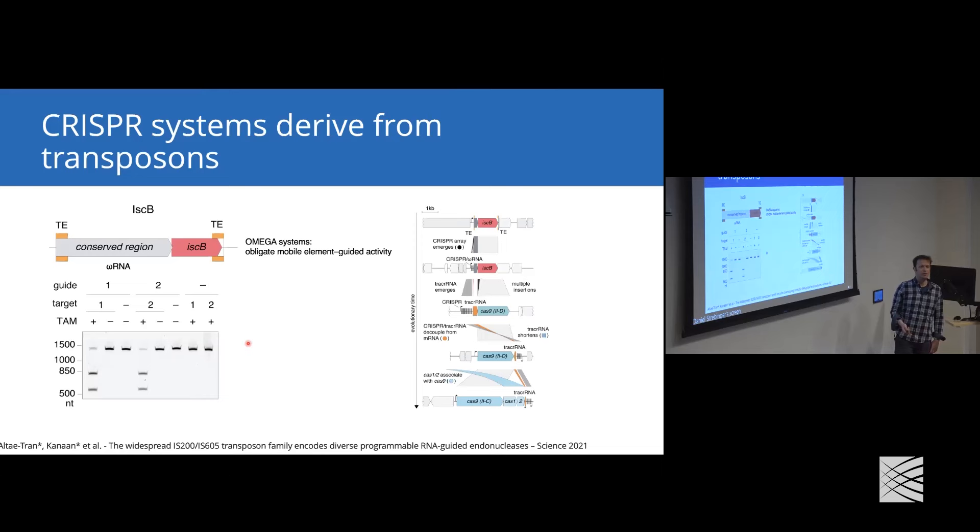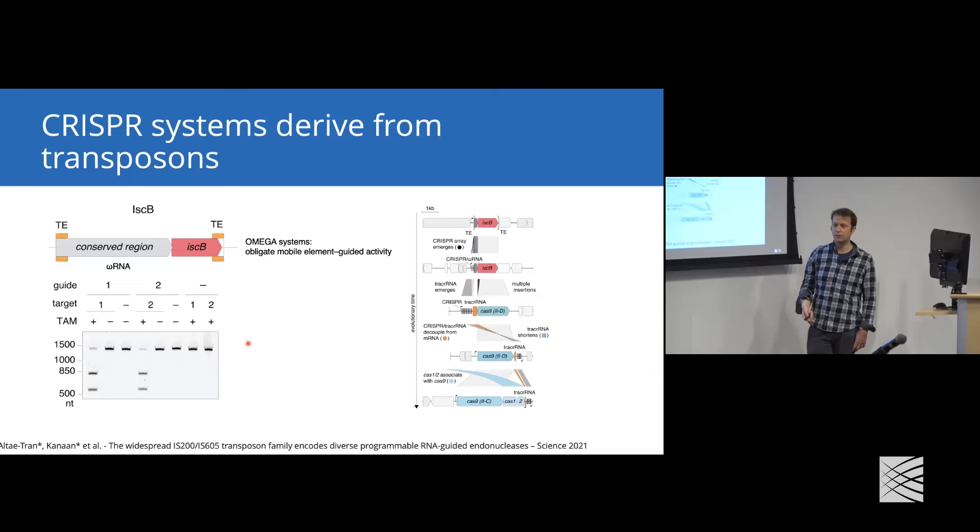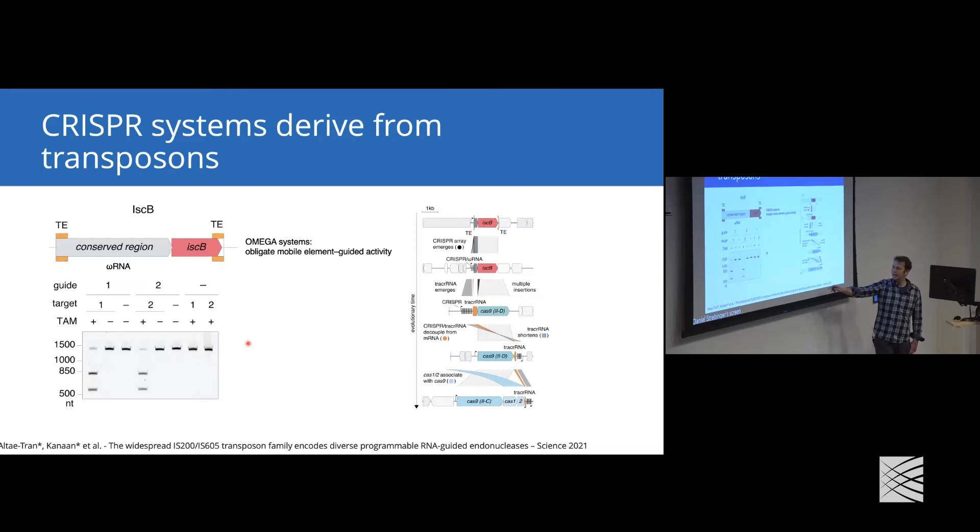Basically, the idea is that IscB, as part of transposable elements, started to associate with a CRISPR array. At that point, it became a hybrid CRISPR omega RNA system. Then IscB underwent multiple domain insertions and the emergence of a tracrRNA. All of these steps can be shown as systems that occur in nature. The CRISPR tracrRNA decouples from the mRNA. Cas9, due to the domain insertions, takes over more of the role of what the tracrRNA or omega RNA do in omega systems, so the tracrRNA can shorten. Finally, Cas9 associates with Cas1, Cas2, and other proteins important for spacer acquisition.